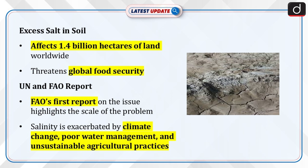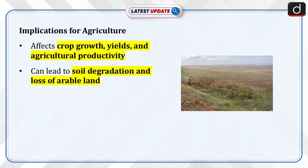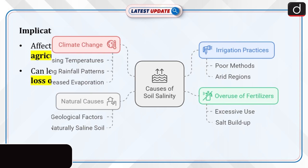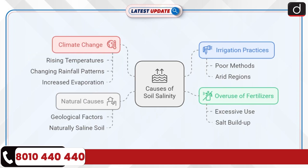The issue primarily affects irrigated cropland, with 10% of irrigated land now being salt-affected. If current trends continue, this percentage is expected to increase, exacerbating the threat to global agriculture. Now let's discuss the causes of soil salinity.